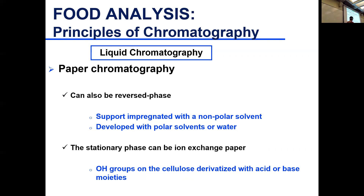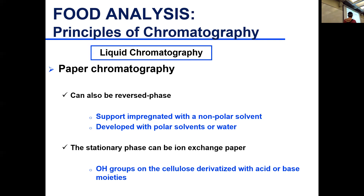You can also derivatize the OH groups of cellulose to carry functional groups with acidic or basic characteristics, making it charged. This allows you to separate based on charge. If the paper carries an acidic functional group, it will be negatively charged and you can separate positively charged compounds. If it carries a basic group, it will be positively charged and you can separate negatively charged ions.